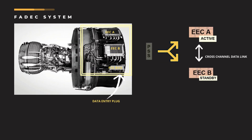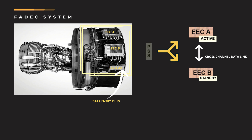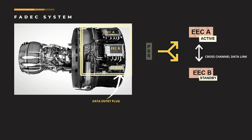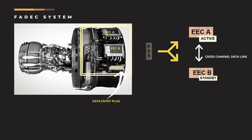Now we will look at the FADEC system. On each engine, the FADEC consists of two EECs, A and B with crosstalk, a PSS, and sensors which are used for control and monitoring. Each EEC channel A and channel B has the capability to control the engine systems based upon the throttle lever angle from the aircraft. Only one EEC at a time will operate the engine valves, actuators, and solenoids. This EEC is called the channel in control, or the active channel.